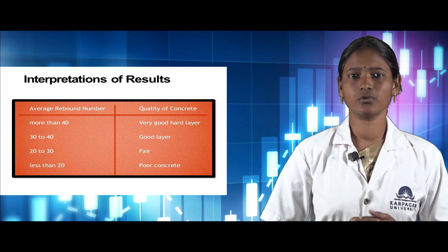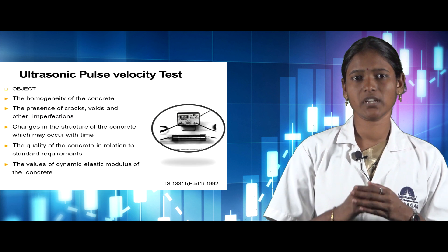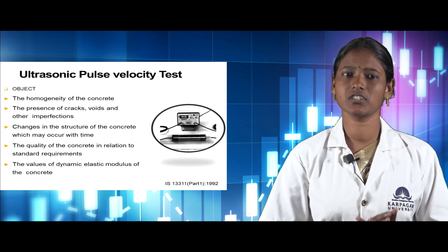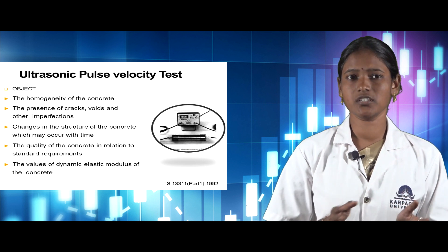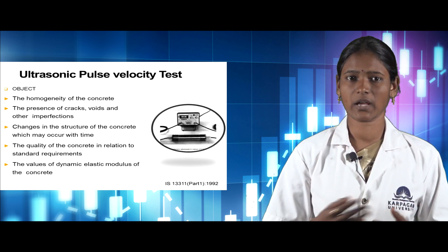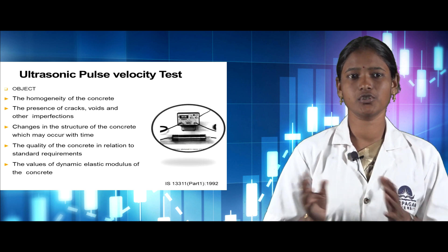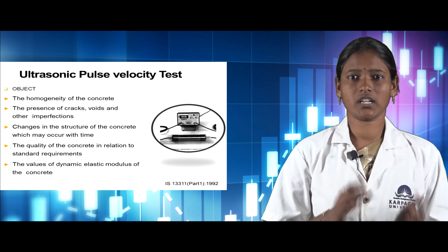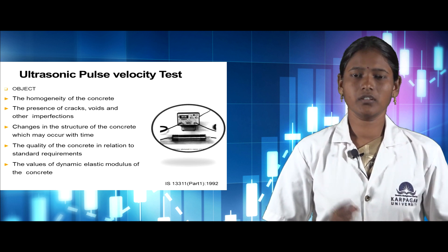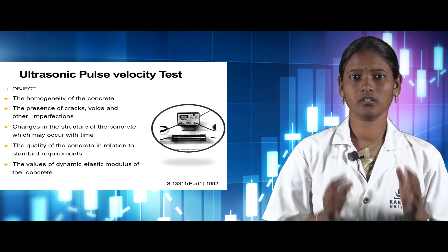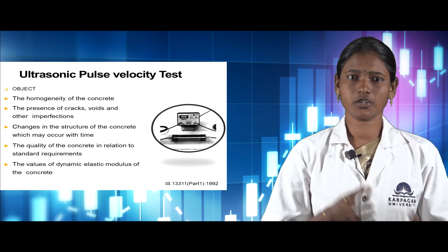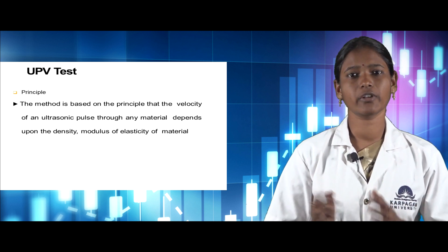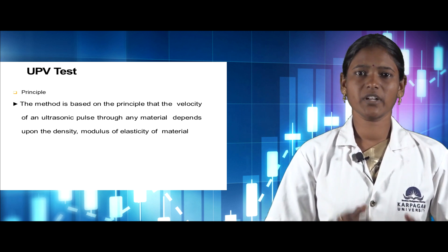The next type of non-destructive testing is the ultrasonic pulse velocity test. Its objectives are to determine the homogeneity of concrete, to find the presence of cracks, voids, and other imperfections, to find changes in the structure over time, to determine the quality of concrete in relation to standard requirements, and to find values of elastic modulus. The principle is that the velocity of an ultrasonic pulse through any material depends upon its density and modulus of elasticity.